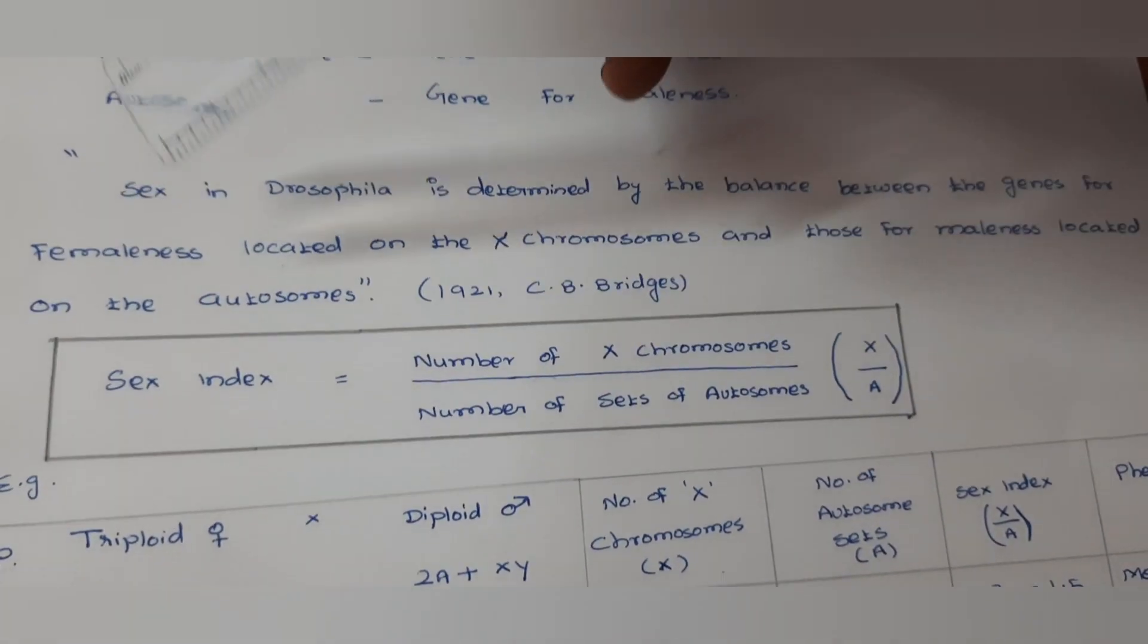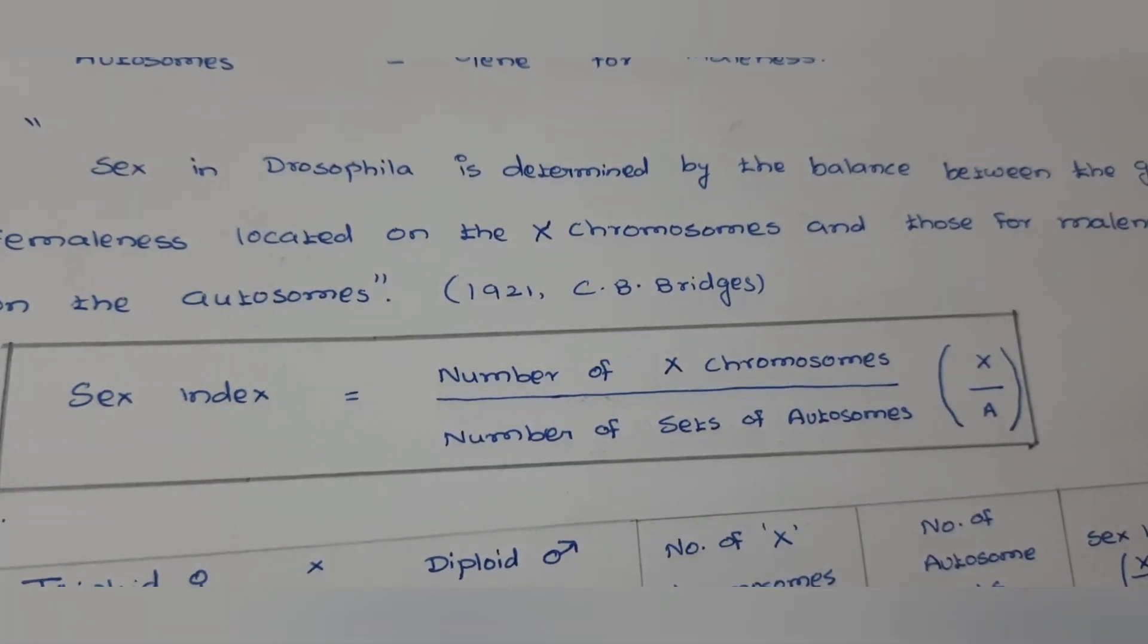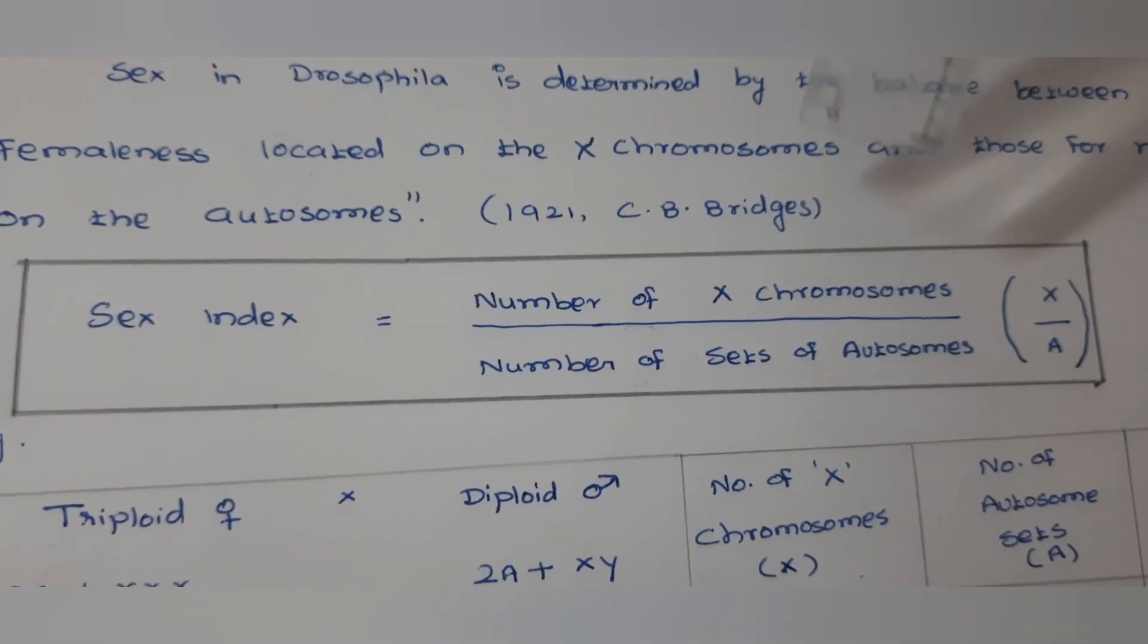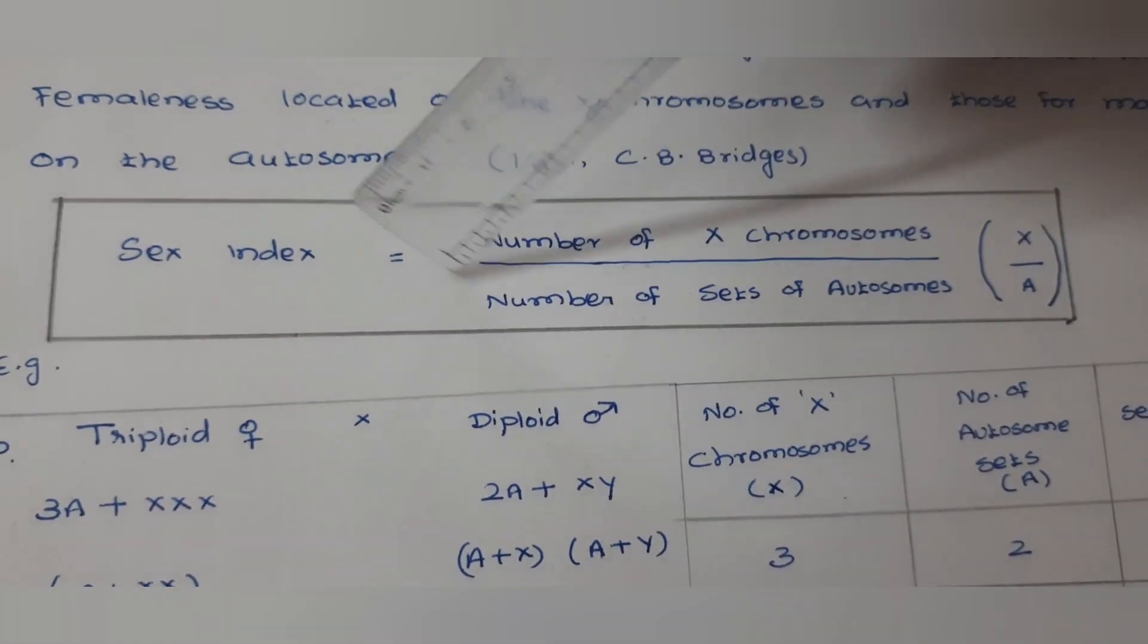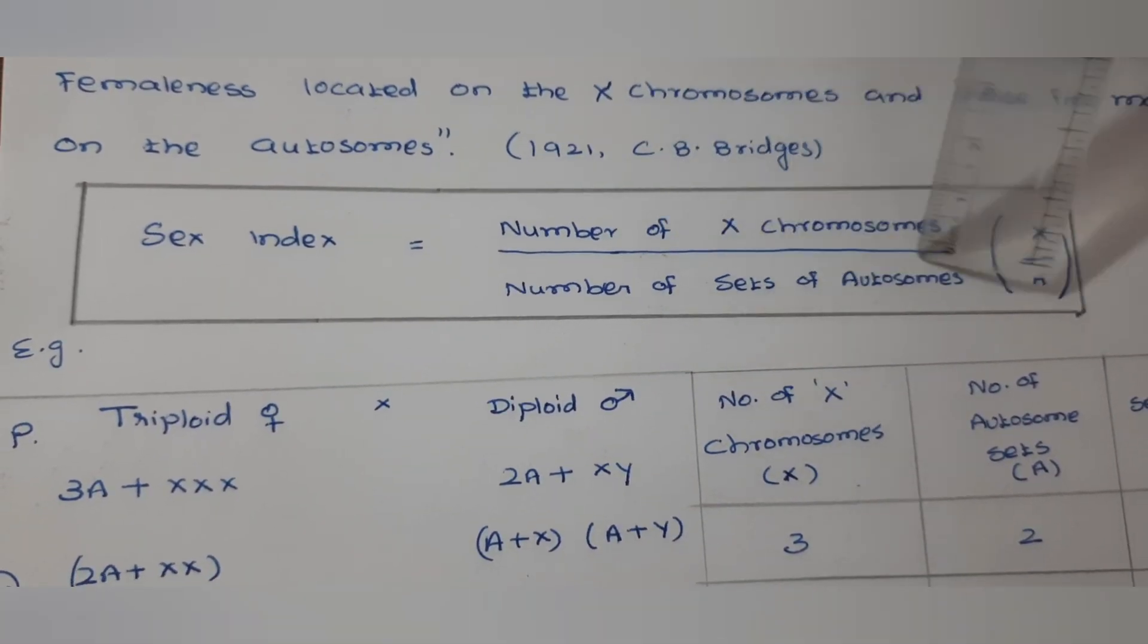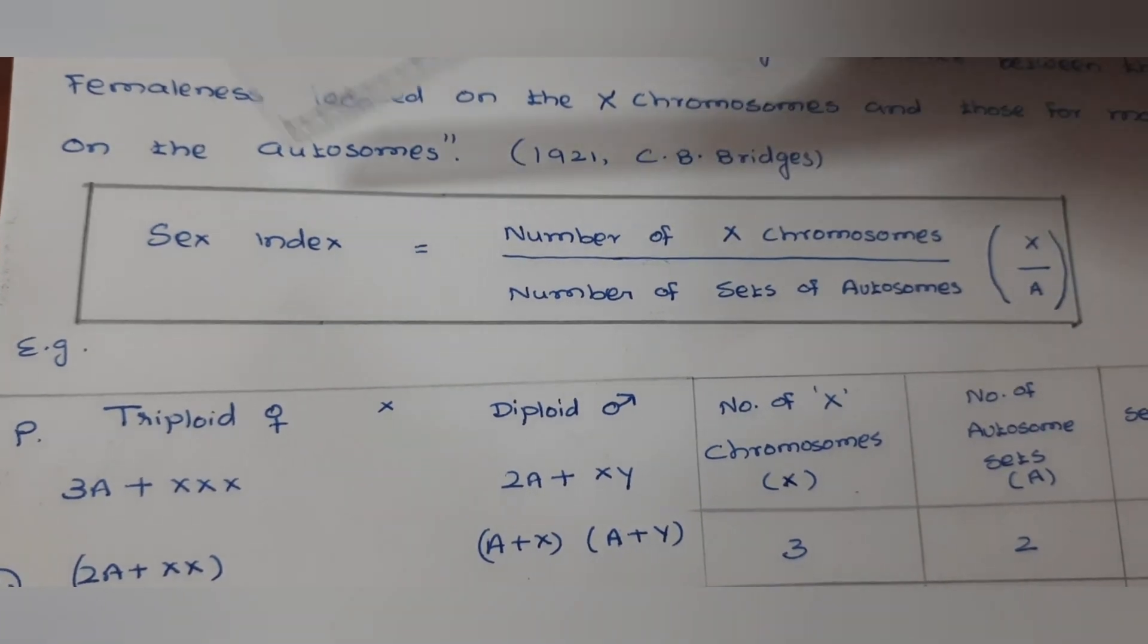So the balance between X chromosome and the autosome determines the sex in Drosophila. That is also called otherwise sex index. Here it is given one simple formula by explaining this theory: number of X chromosomes by number of sets of autosomes, X by A. It is called sex index.